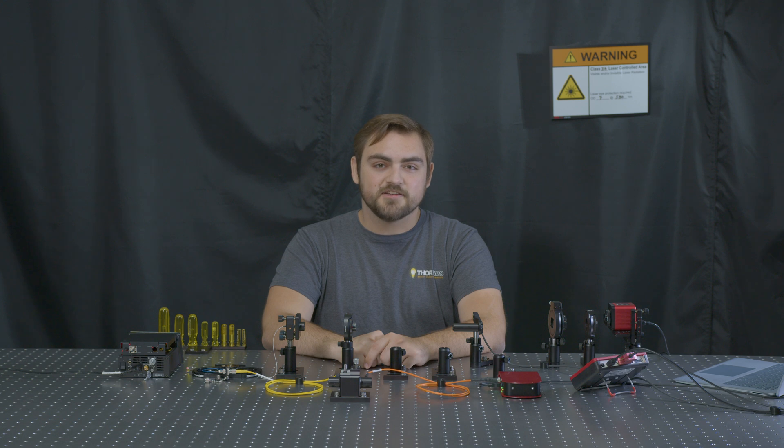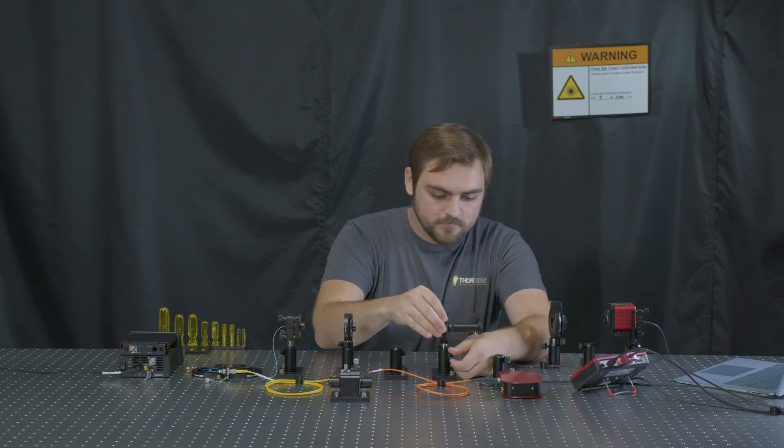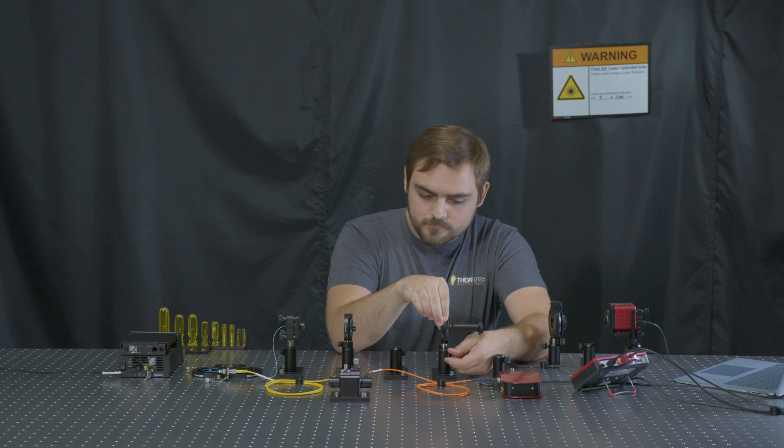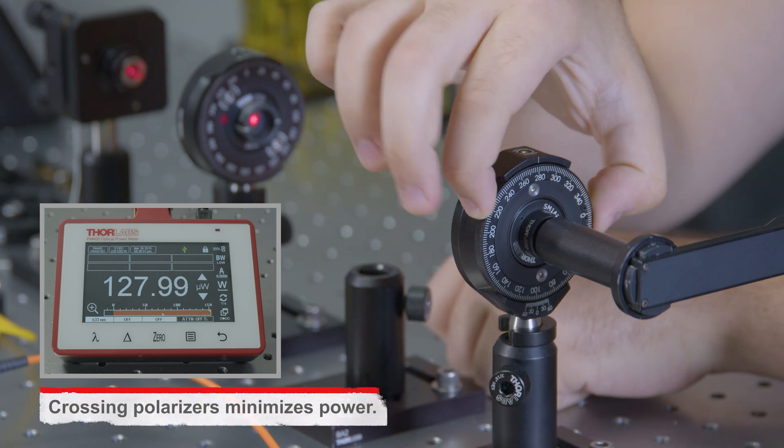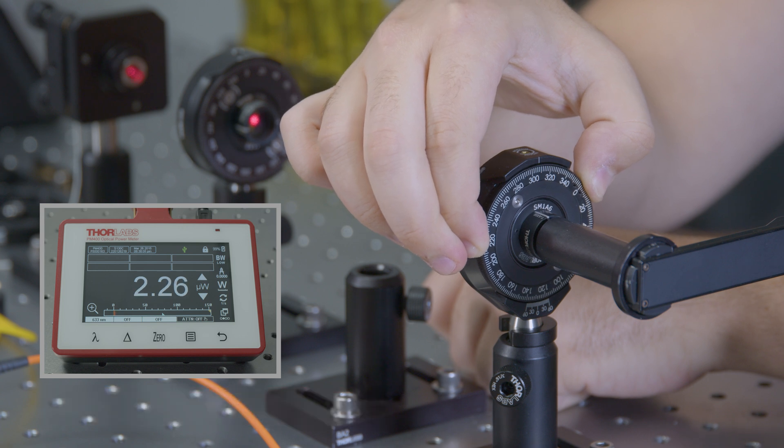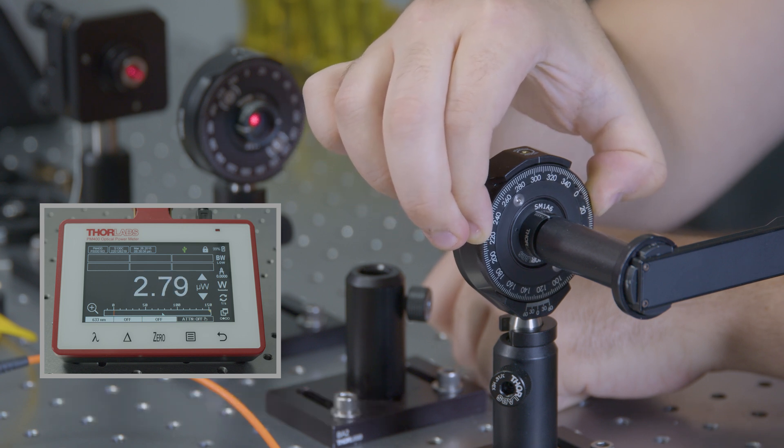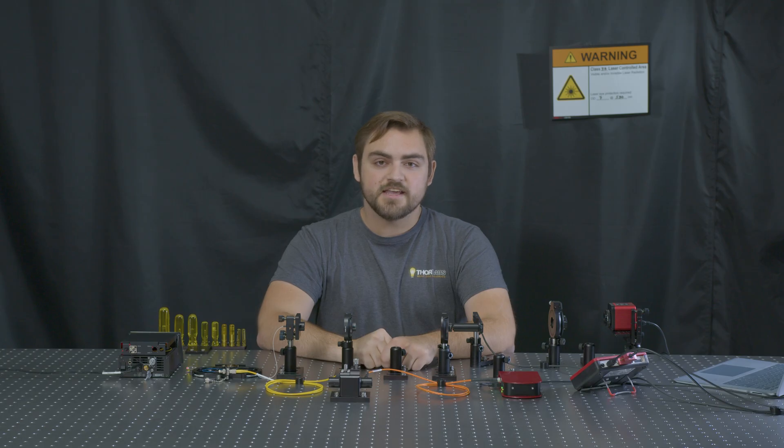Our second polarizer acts as our analyzing polarizer. We'll insert that right before the power sensor. Now, we'll rotate it until we see a minimum power recorded. Here, we'll engage the indexing of the mount so we have a detent where the polarizers are crossed, with a 90-degree relative angle between each other.